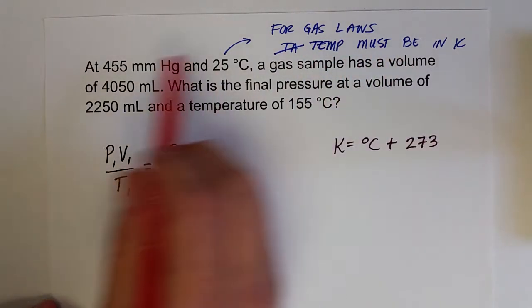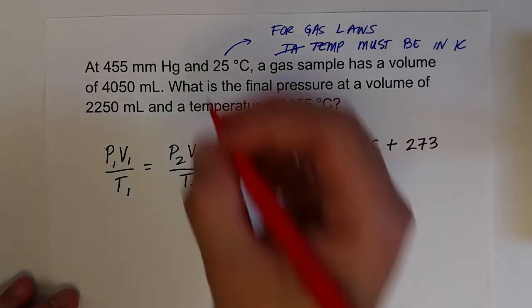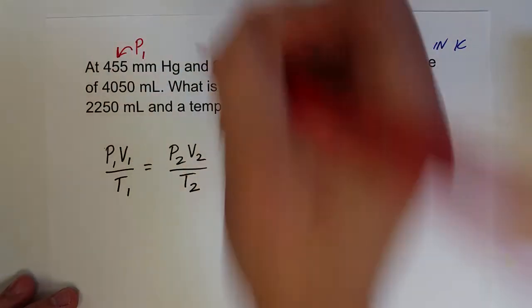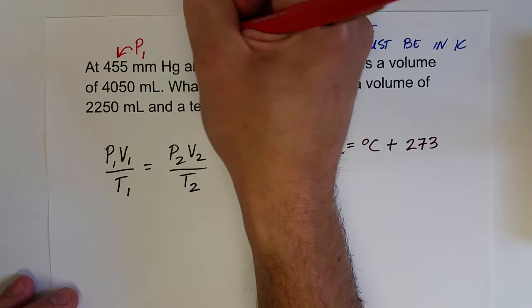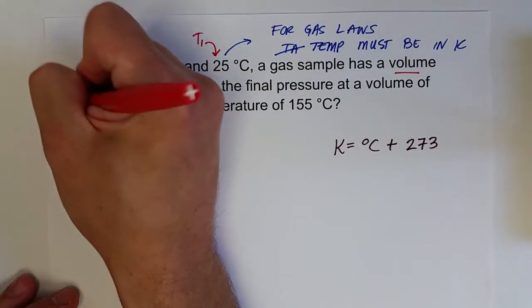So a sample initially has a volume, pressure, and temperature here. So these are all our first values. This would be P1, T1, and the initial volume V1.